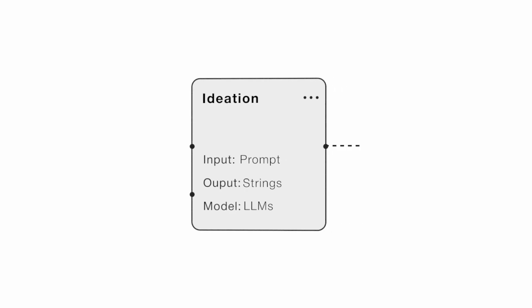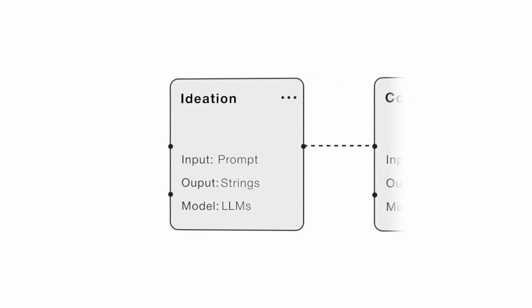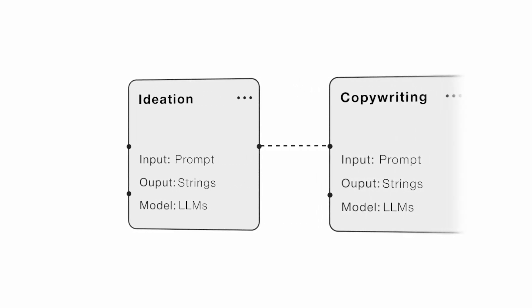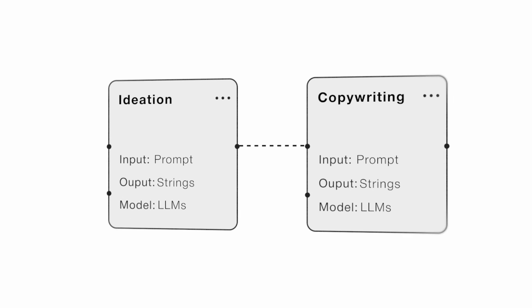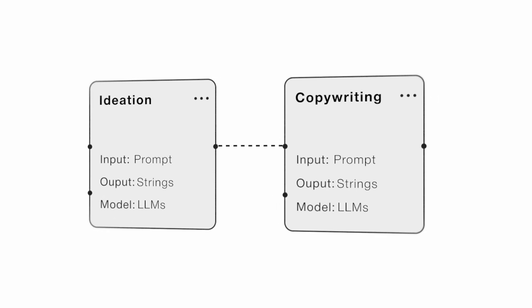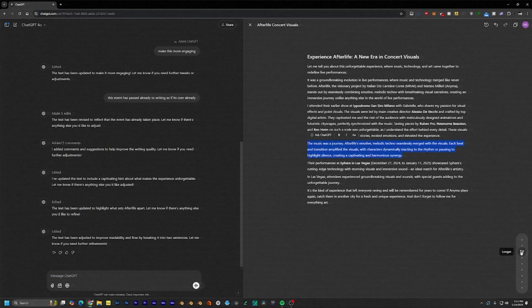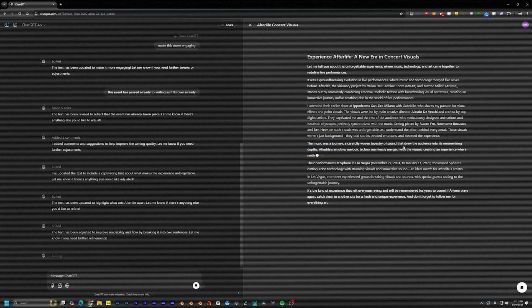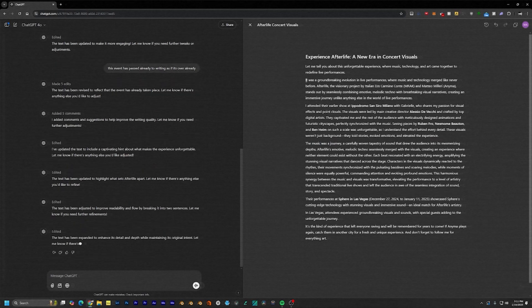Next: copywriting. Again, we are using LLMs like ChatGPT and features like Canvas. You can edit the script smoothly, make adjustments on the fly, and keep everything flowing naturally.